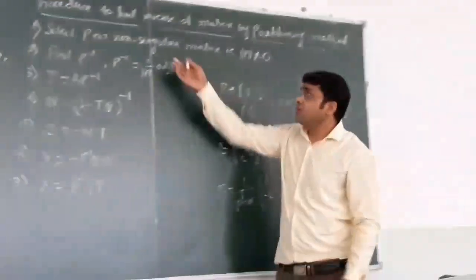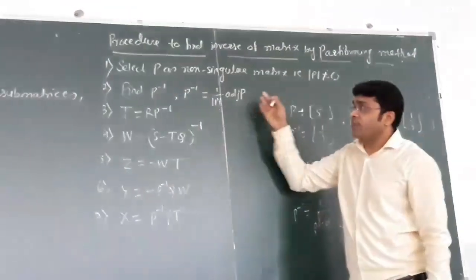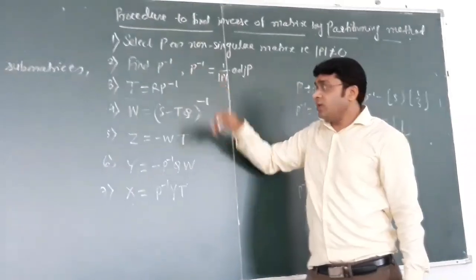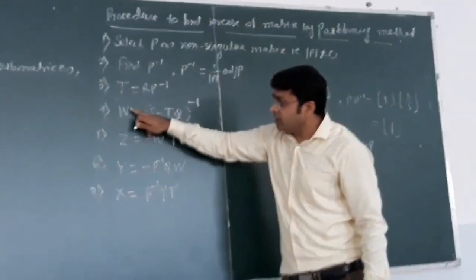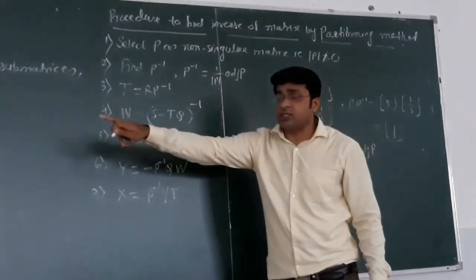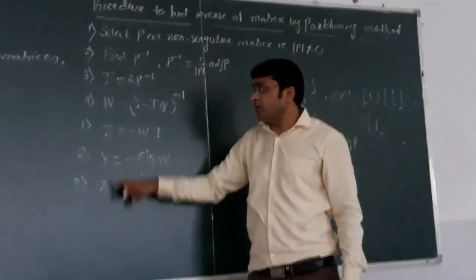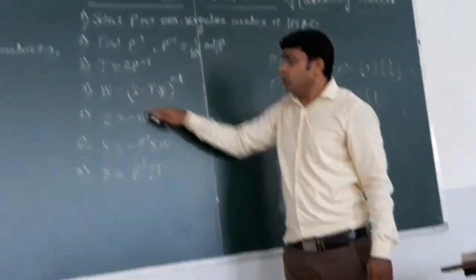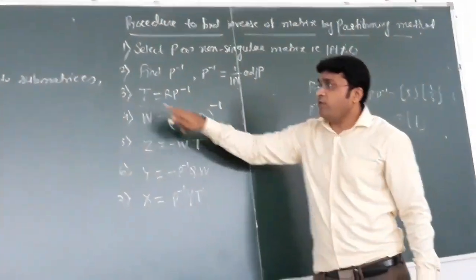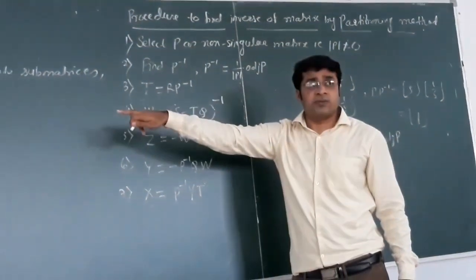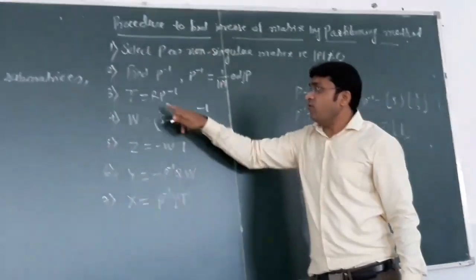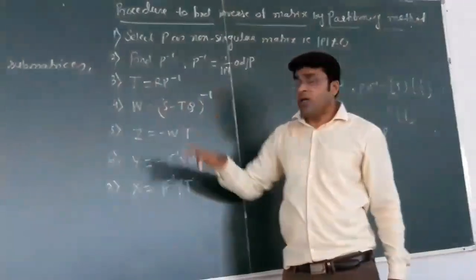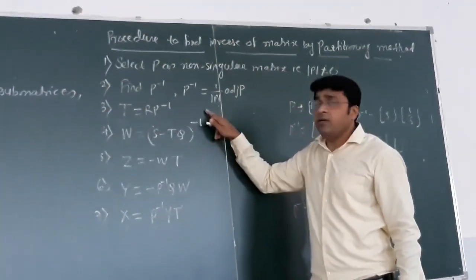We have found out P inverse. After that, our job is to find out T, and T is R into P inverse. Then we have to find W now. W is nothing but (S minus TQ) inverse. S we are already having from the partition, T we just found, and Q is also there in the partition. We take subtraction and then inverse.